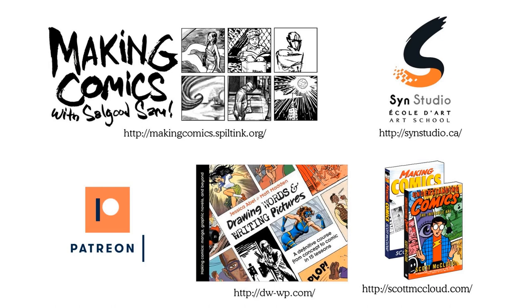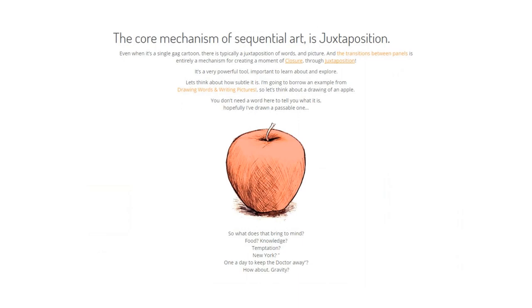Mastering Comics follows up to Drawing with Words and Writing with Pictures — also excellent. So let's get on with it. One of the core mechanisms of sequential art is juxtaposition, which basically means putting two things together to create a relationship between them, and in the context of comics, a third idea. So anytime you put words and pictures together, that creates juxtaposition. When there are transitions between panels, that creates juxtaposition.